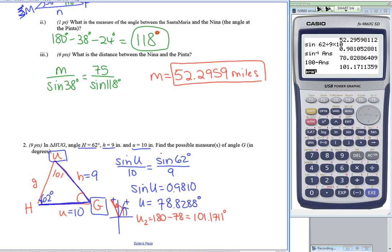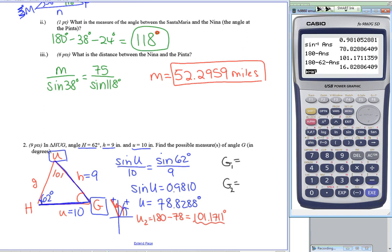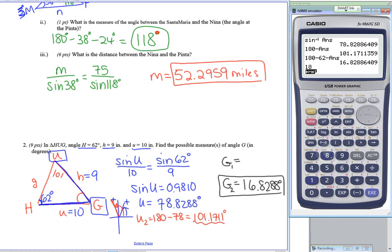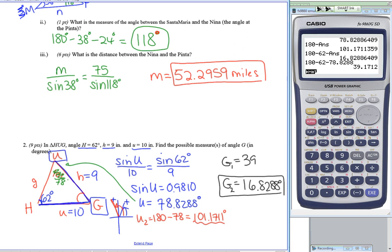Finding both values of angle G: for G1, starting with 180 and subtracting 62 degrees for angle H and the 101.1711-degree value for angle U gives G1 equal to 16.8288 degrees. For G2, using 78.8288 degrees for angle U instead gives G2 equal to 39.1712 degrees. Both answers are needed since both are valid possibilities.